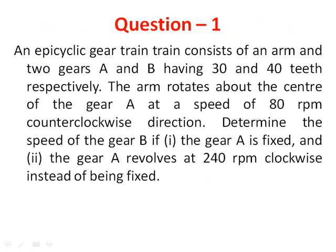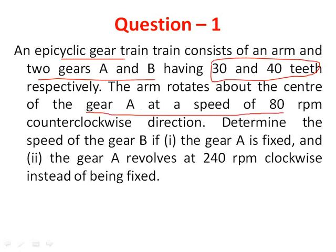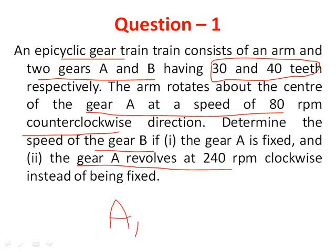Let us go to the question straight away. Here we have an epicyclic gear train with two gears, A and B, with 30 and 40 numbers of teeth respectively. The speed of the arm is 80 RPM rotating counterclockwise. We need to find the speed of gear B under two conditions: first, if gear A is fixed; and second, if gear A rotates at 240 RPM clockwise.